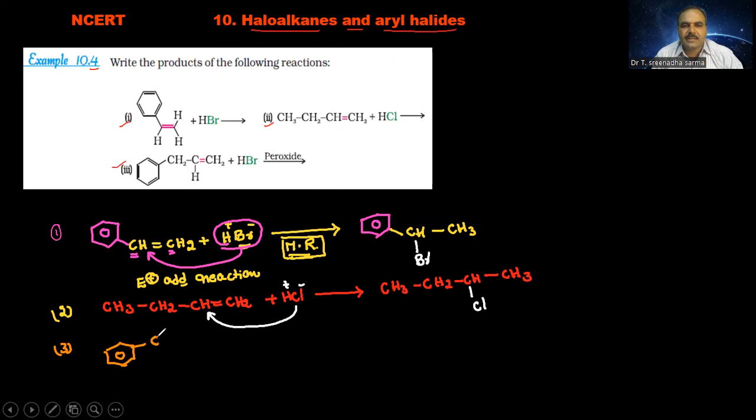C6H5-CH2-CH=CH2, this one is reacted with HBr. The reaction proceeds in the presence of peroxide. In the presence of peroxide, the addition reaction follows according to anti-Markovnikov rule.